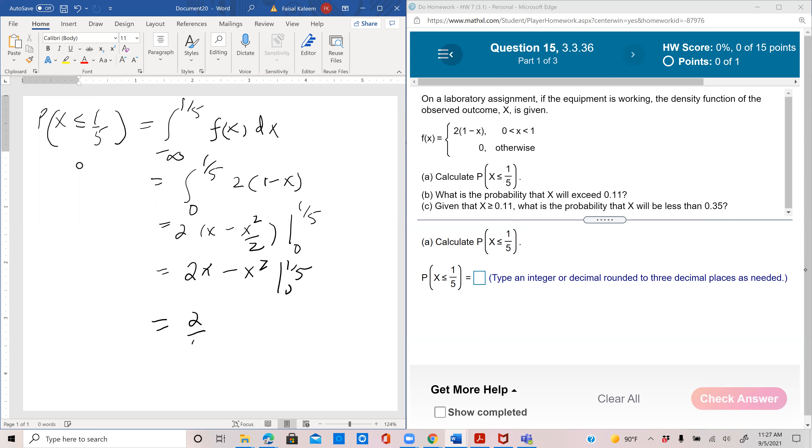So two-fifths when you put x equals one-fifth, so minus one-fifth whole square. So two-fifths is 0.4 and one-fifth whole square is 0.04. So 0.4 minus 0.04 would be 0.36.